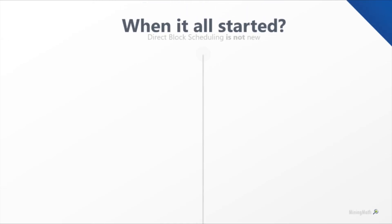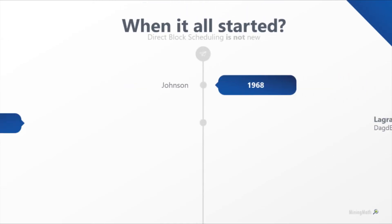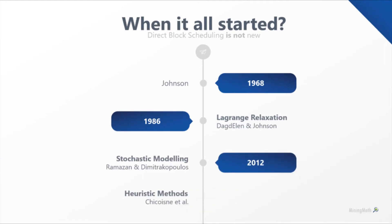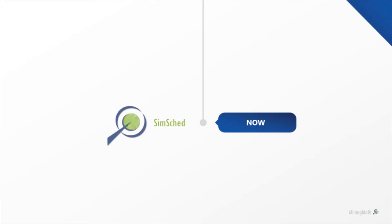Direct block scheduling has been extensively studied by academia since 1968, when Johnson first published an algorithm that could optimize the mine schedule straight from the block model. Other authors followed the same path, and in 2015, SimSched DBS Beta was released to the market as the first commercial tool to implement such technology.